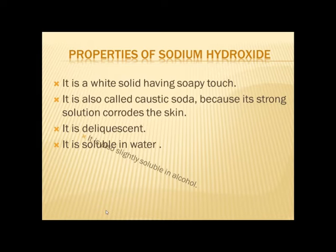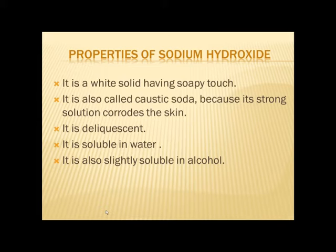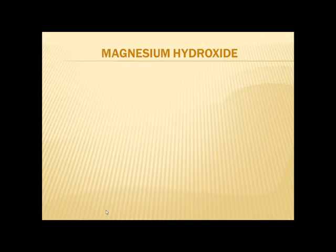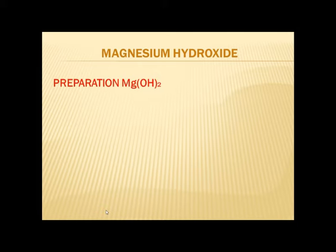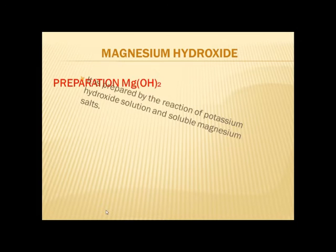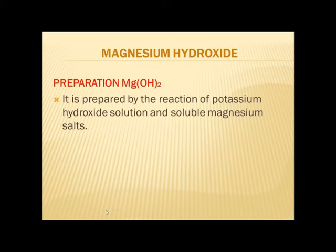It is also slightly soluble in alcohol. Magnesium hydroxide is another example of a hydroxide. It can be prepared by the following method: when soluble magnesium salts react with KOH, magnesium hydroxide is formed as a result.